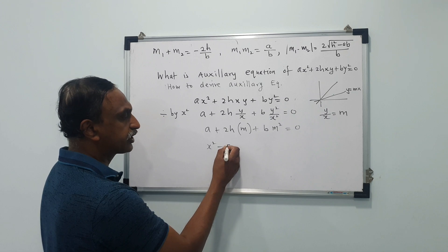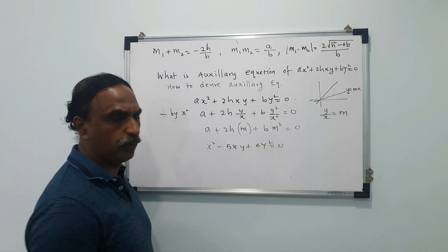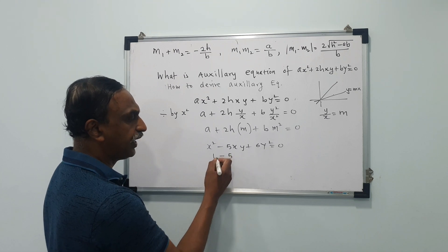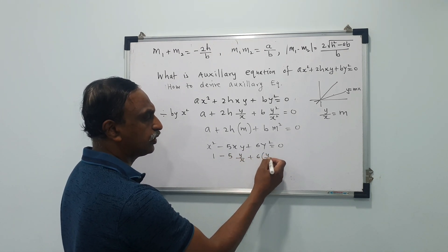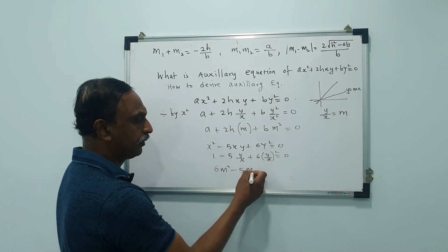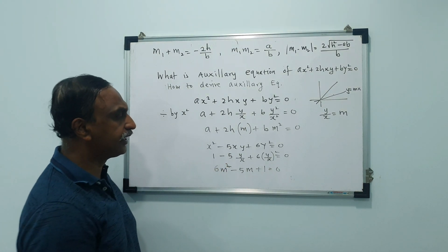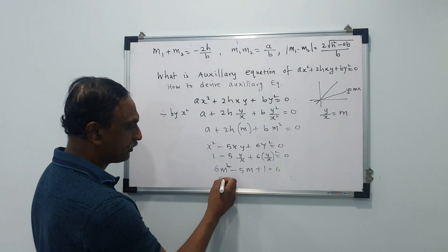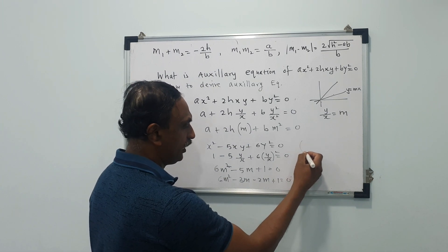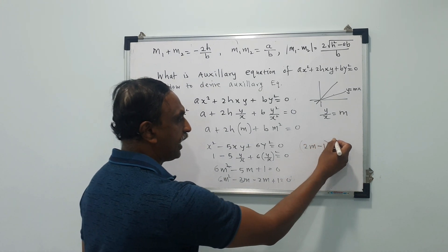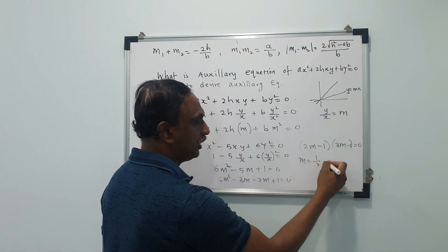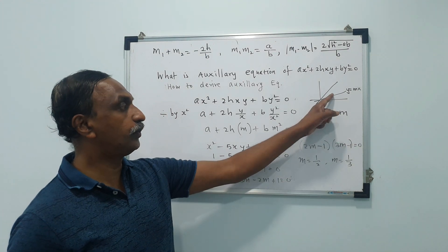For example, x² - 5xy + 6y² = 0. If I want to find out the slopes, just divide by x². You get 1 - 5(y/x) + 6(y/x)² = 0. Replace y/x by m: 6m² - 5m + 1 = 0. Solving by factorizing: (2m - 1)(3m - 1) = 0, giving m = 1/2 and m = 1/3. These represent the slopes of the two lines.